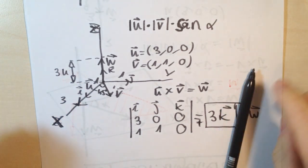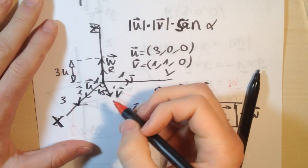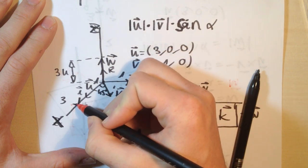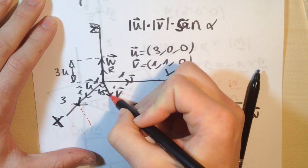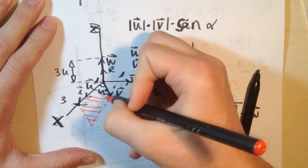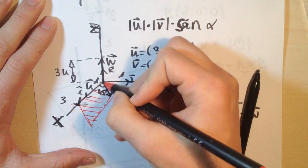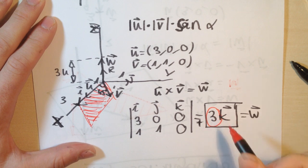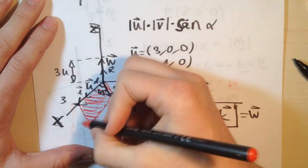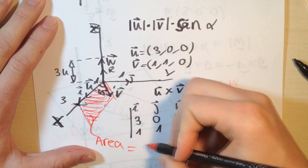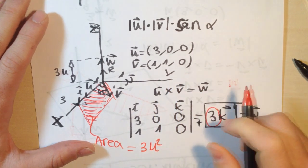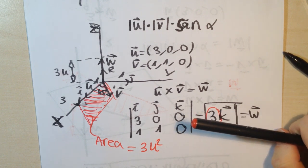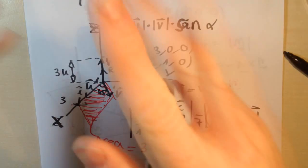The area of the parallelogram that involves these two vectors u and v — I draw here parallel to v and here parallel to u — this parallelogram has an area of 3 square units. It's the magnitude of w. This is always the case. I hope you understood it; you should ask me anything you don't understand. Best regards and goodbye — ciao, ciao.